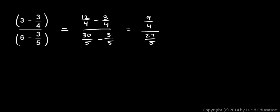And that's the same as saying 9 fourths times the reciprocal of 27 fifths, which is 5 over 27. That's because dividing by a fraction is the same as multiplying by the reciprocal.